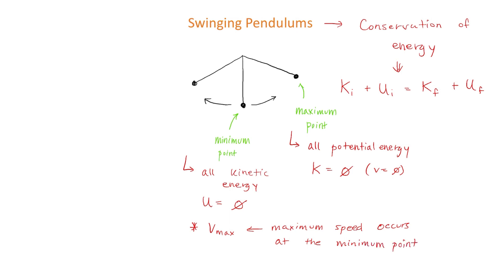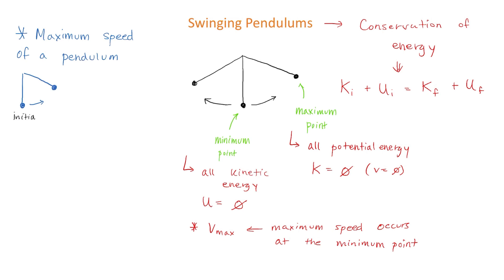This makes sense because at the minimum point, the pendulum has the greatest amount of kinetic energy. Now that we understand the pendulum's swinging motion, a very important question that comes up all the time is: what is the maximum speed of a pendulum? So let's derive an equation to find v_max. I'll start by drawing my pendulum, imagining that we start at the minimum point and swing out to the maximum point. The next thing we want to do is write our conservation of energy equation.